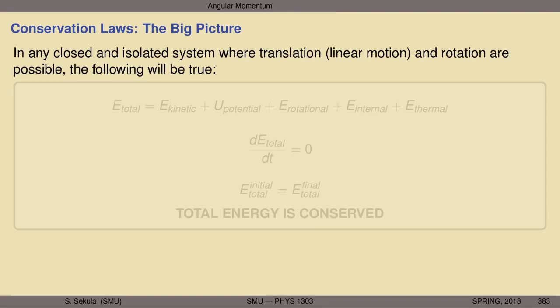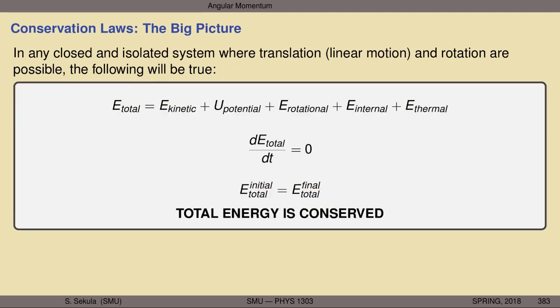Let's step back and take a big-picture look at conservation laws. We've essentially completed a set. In any closed and isolated system where linear motion and/or rotation are possible, we can apply conservation laws: total energy — the sum of linear kinetic energy, potential energy from conservative forces, rotational kinetic energy, and internal energy — is conserved.